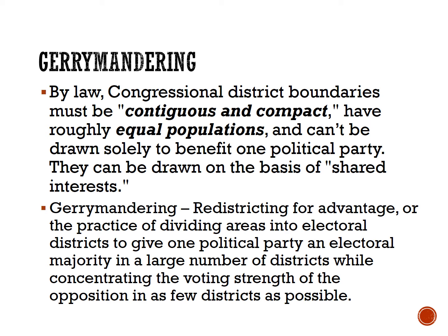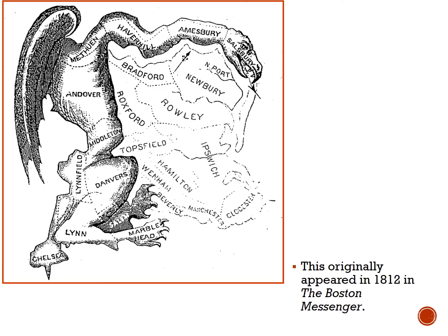This is known as gerrymandering, or redistricting for advantage — the practice of dividing areas into electoral districts to give one political party an electoral majority in a large number of districts while concentrating the voting strength of the opposition into as few districts as possible. Gerrymandering has impacted the national scale to influence congressional districts, but it also stretches down to the local scale, influencing city council districts, which may actually have a greater impact on individual people's day-to-day lives.